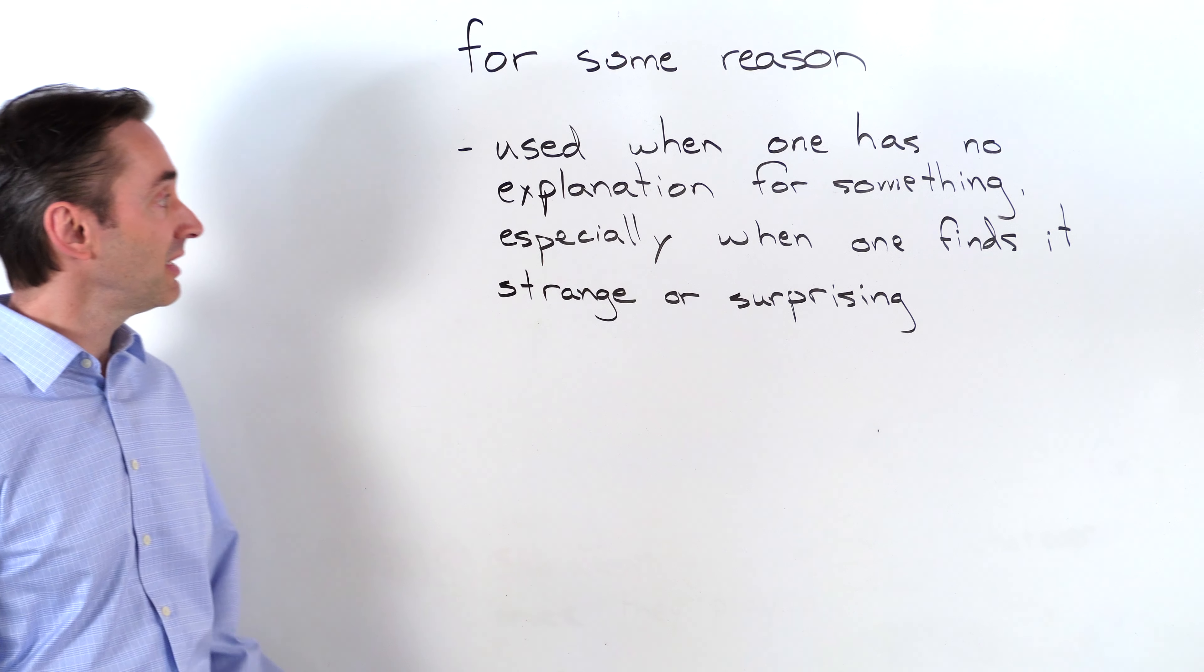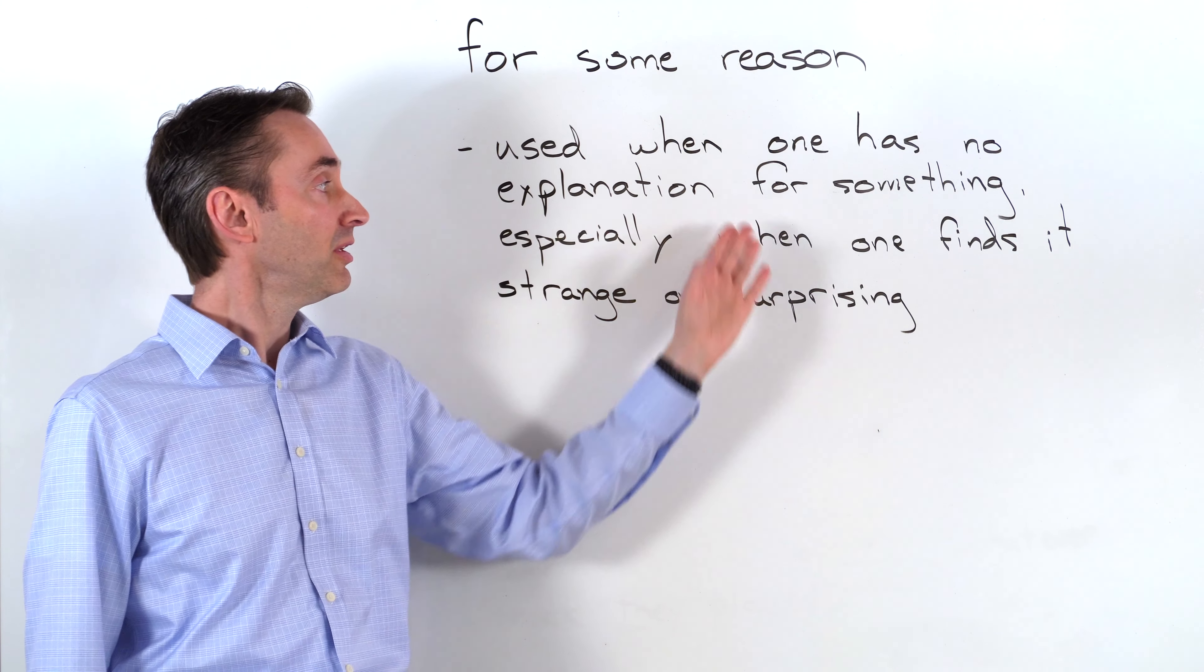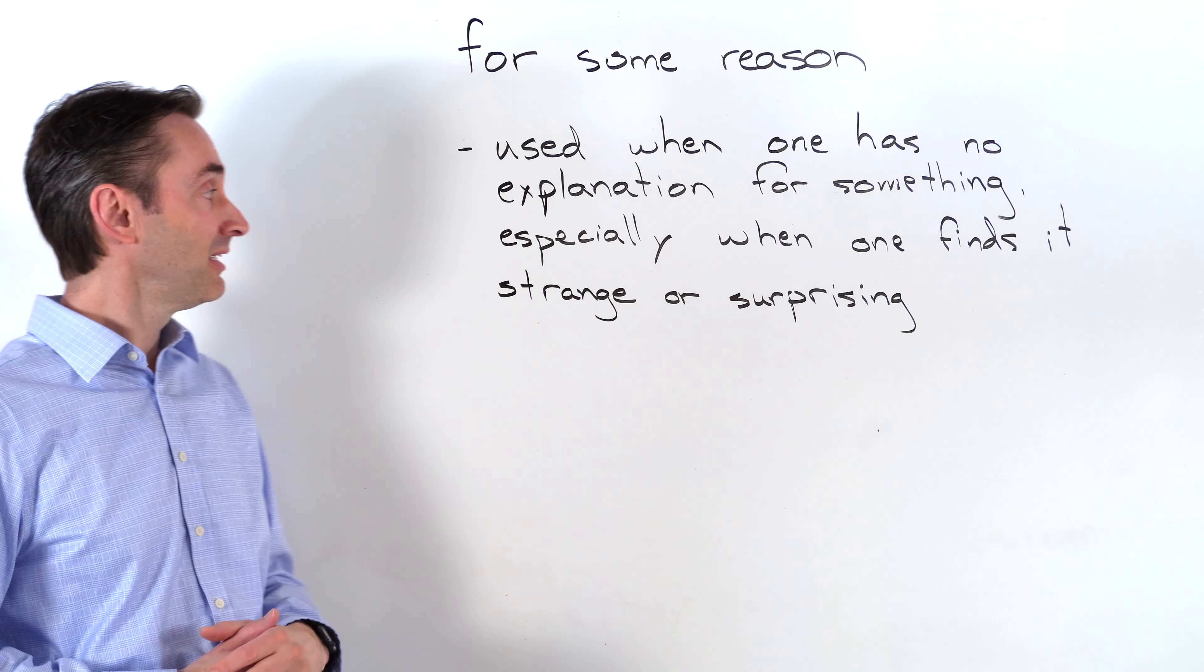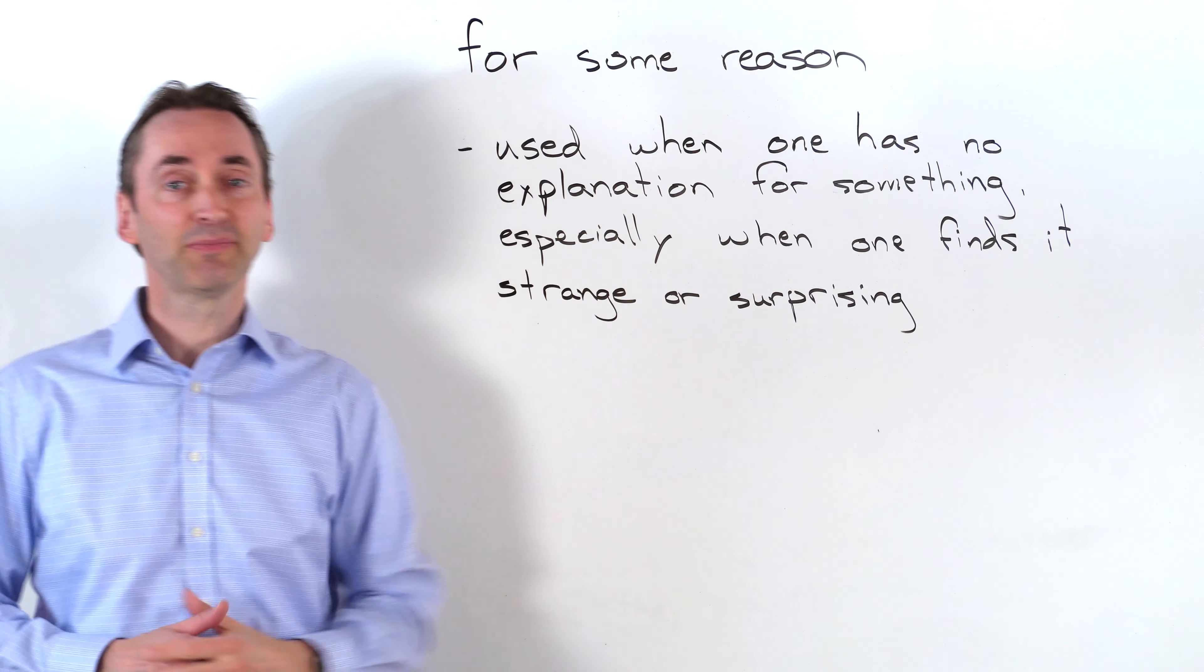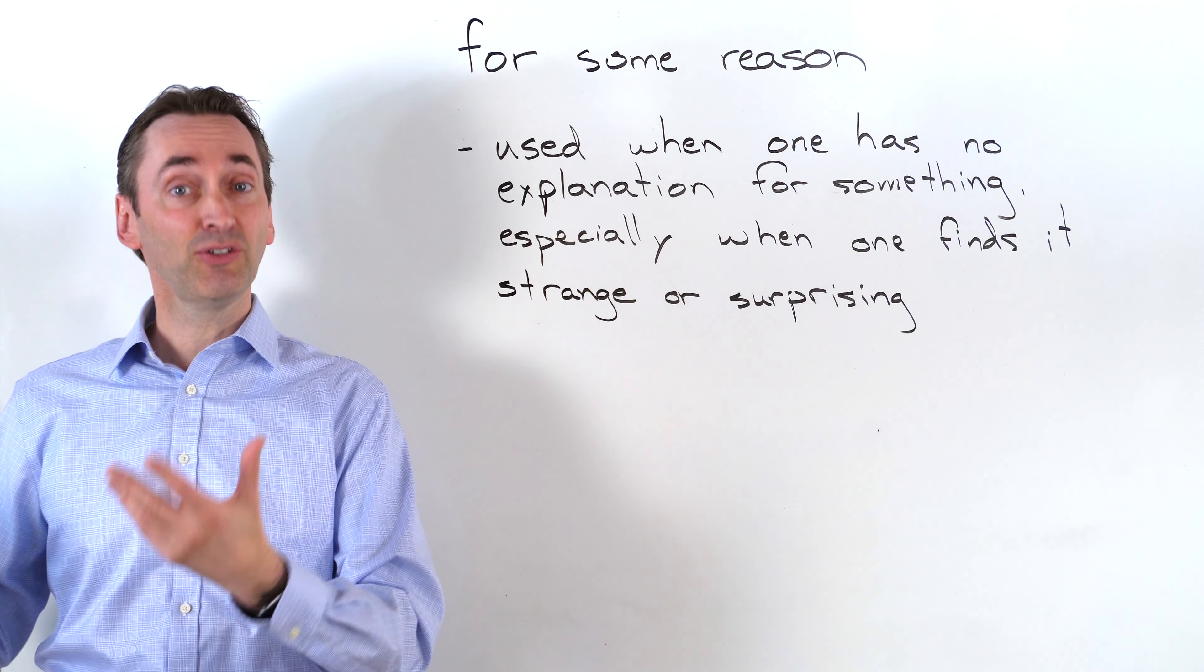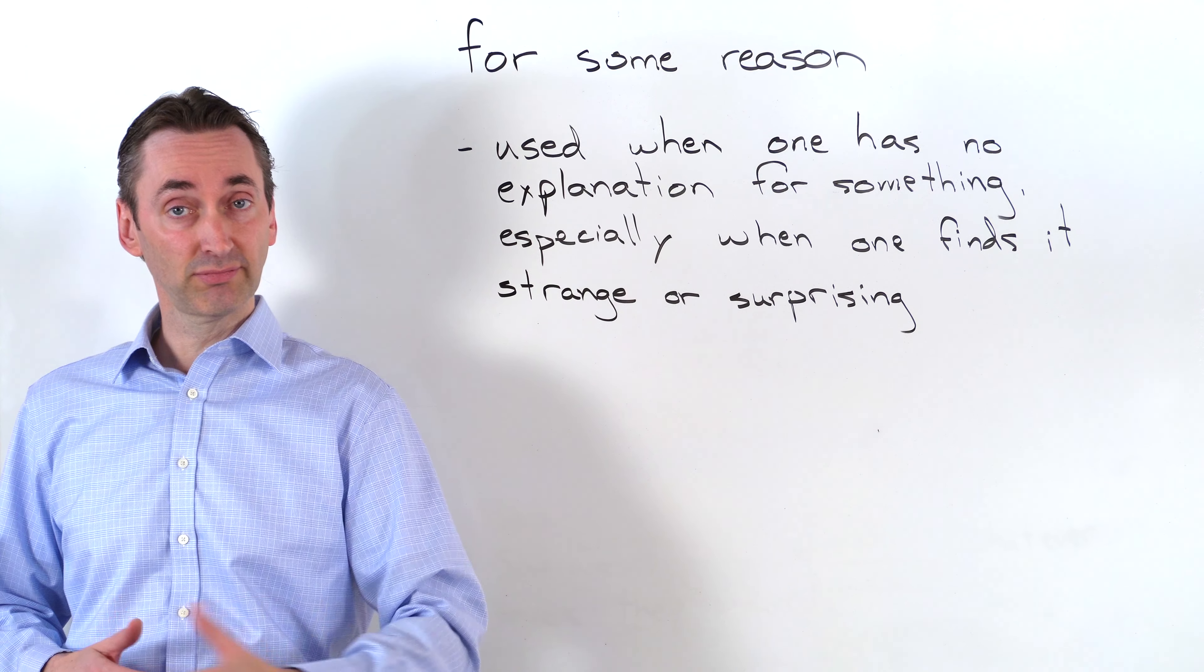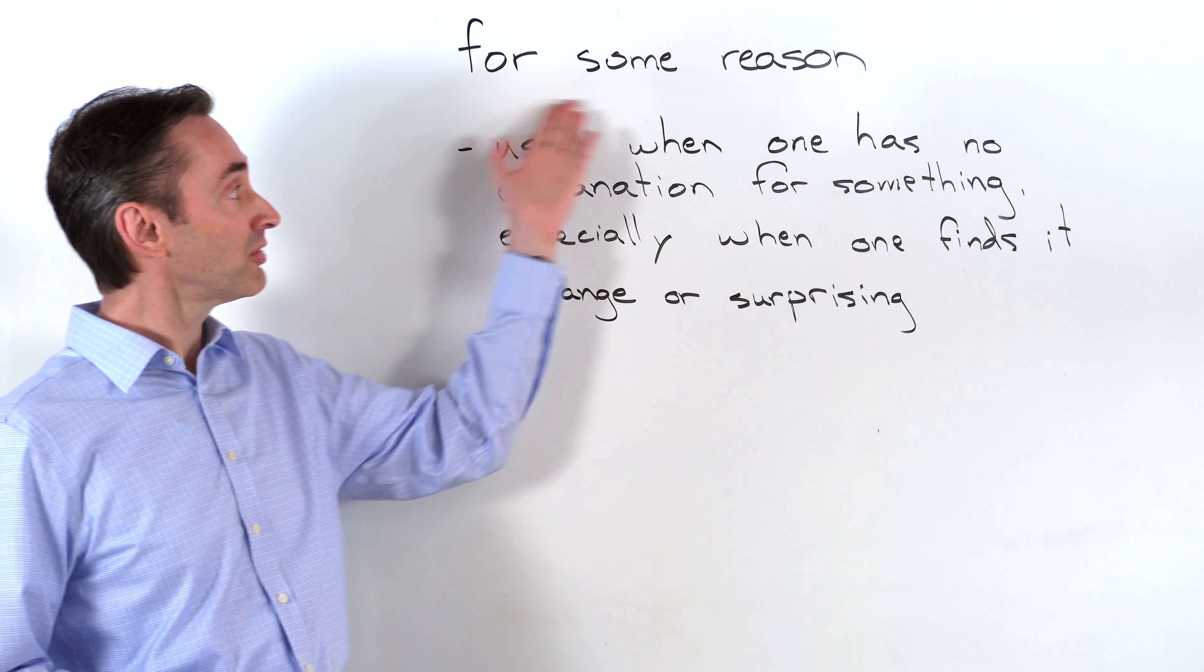For some reason is used when one has no explanation for something. I can't explain something. I don't know why something is happening, especially when one finds it strange or surprising. I don't know why something has happened and I'm surprised by that. I don't know why something is happening and I find it strange. In this situation we say for some reason.